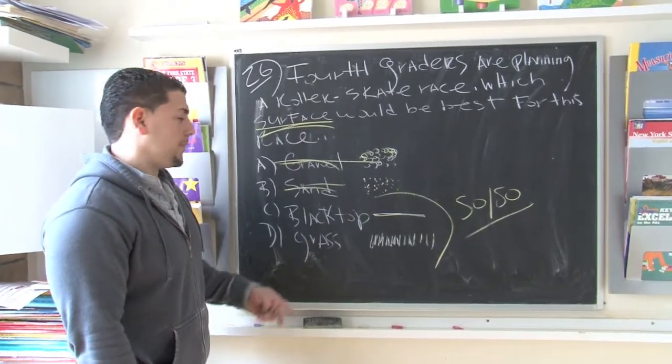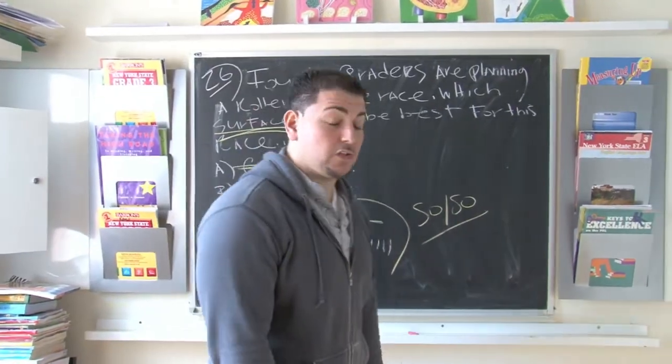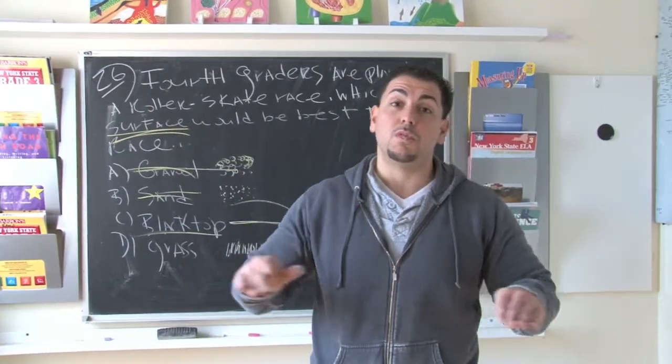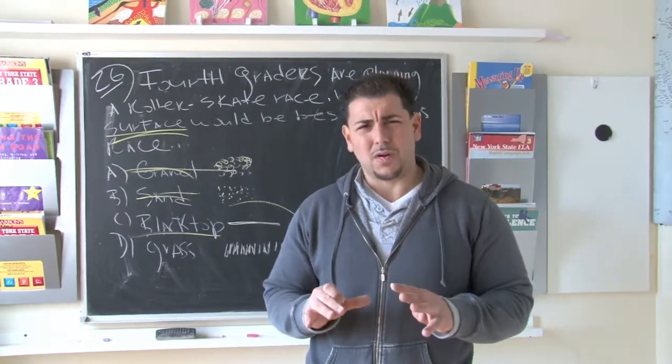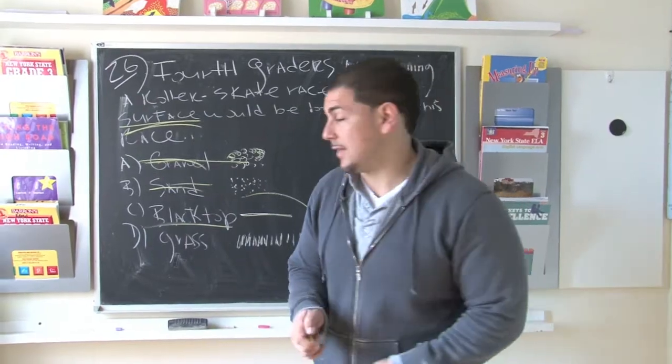Something called black top. Now black top is a word that they use on the test. It may be confusing, but all that really means is smooth ground. So whenever you hear the word black top, they're talking about like asphalt, smooth ground. So it's the best possible answer.